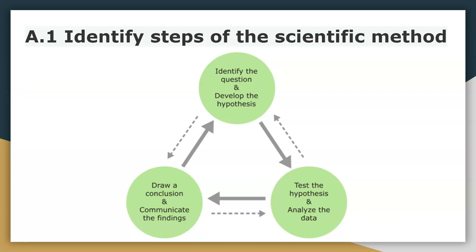Hello everyone. Today we are going to go over IXL A1, Identify Steps of the Scientific Method. Before we do some practice problems, I want to go over the six steps of the scientific method that IXL A1 specifically talks about. Those six items are: identify the question, develop the hypothesis, test the hypothesis, analyze the data, draw a conclusion, and communicate the findings.